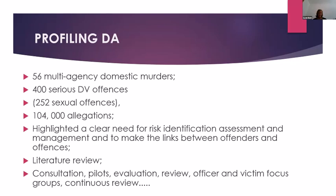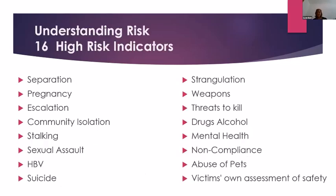What they identified from this profiling was 16 high risk indicators that allowed us to say: if these indicators are apparent and prevalent, this case is high risk. So now when we look at training, we focus on these high risk indicators because they are all prevalent leading up to a domestic abuse murder. If I pull out a few of these to help you understand why they are high risk indicators: when we look at separation, for example, all domestic abuse murders occur at the point of separation or within three months of it. Anyone looking at risk would immediately ask: is this person looking to leave? Have they left? Does the perpetrator know they're leaving?